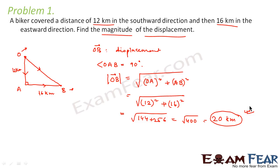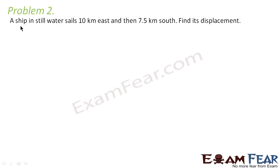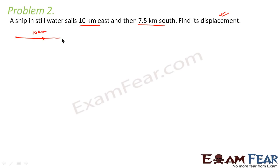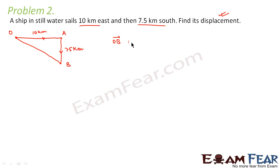Problem 2 states: a ship in still water sails 10 kilometers east and then 7.5 kilometers south. Find its displacement. In this case we have to find both the magnitude as well as the direction of displacement. The ship starts from point O, sails 10 kilometers east to point A, then 7.5 kilometers south to point B. The displacement is the path OB between the initial and final position.